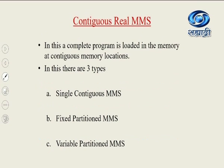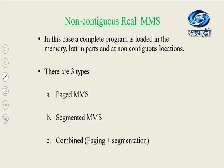In contiguous real memory management, a complete program is loaded at contiguous memory locations. There are three types: first is single contiguous memory management system, then fixed partition, and third is variable partition. In non-contiguous real memory management, a complete program is loaded in parts at non-contiguous locations — its parts are scattered at different locations in memory. There are three types: paged MMS, segmented MMS, and combined — that is a combination of paging and segmentation.